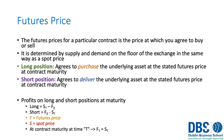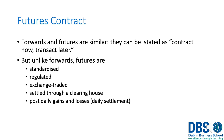The price of a futures contract is the price at which you agree to buy or sell, determined by supply and demand on the floor of the exchange. There is a spot price. A long position agrees to purchase the underlying asset at a stated future price, and a short position agrees to deliver the underlying asset at a stated future price. On the long side, profit is made if the spot price is higher than the forward price. On the short side, profit is made if the forward price is greater than the spot price. At maturity, the forward price and the spot price will ultimately be the same.